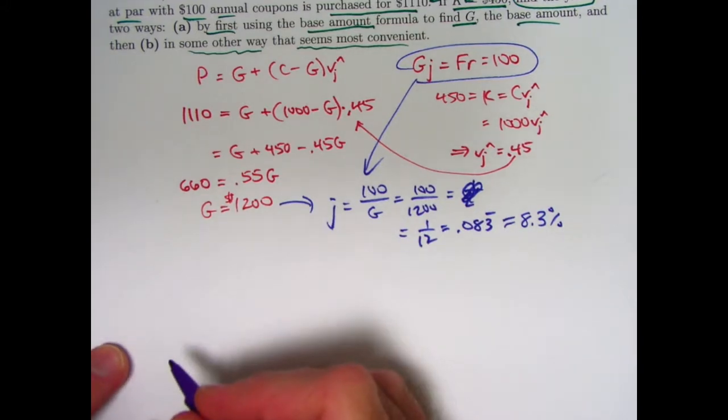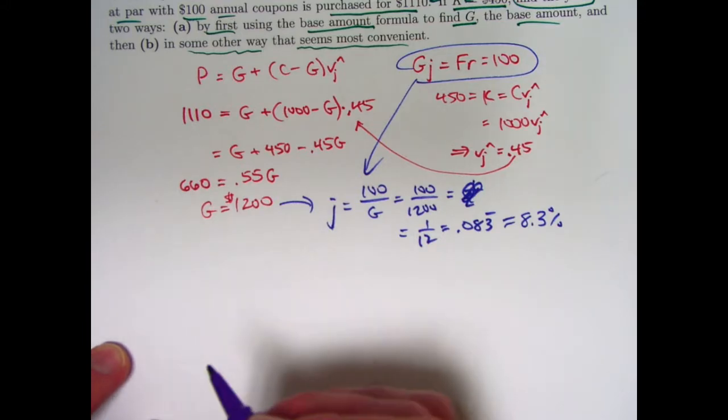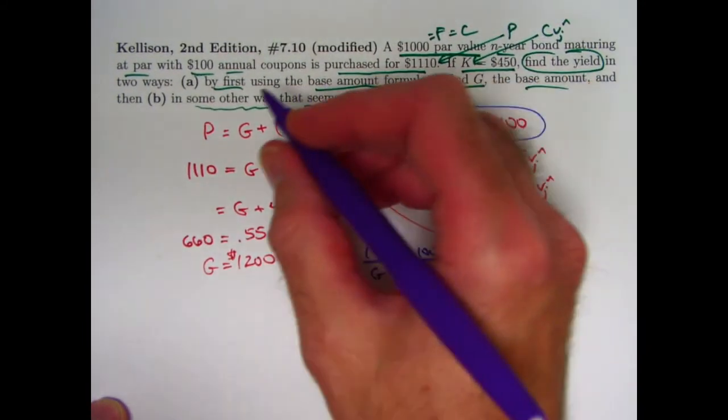Well, we know C, we know K, we know little g, the modified coupon rate is the same as R, the actual coupon rate.